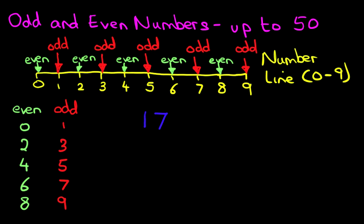Now always remember one thing. It does not matter what this digit is. All that matters is the units. Here are the units. How many units are there? 7. Now 7, let's have a look down here. 7 is over here. So this is an odd number. 17 is an odd number. So that wasn't very difficult, was it?